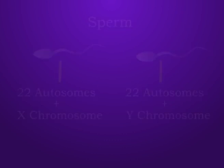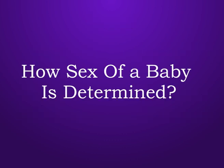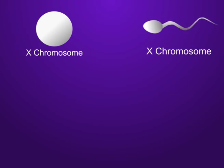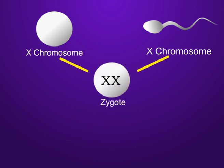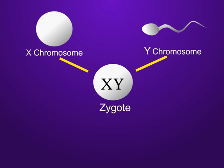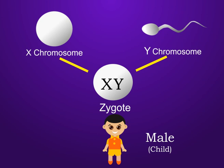Now we see how the sex of a baby is determined. When an egg is fertilized by a sperm containing an X chromosome, the zygote formed would have two X chromosomes. When an egg is fertilized by a sperm containing a Y chromosome, the zygote formed would develop into a male child.